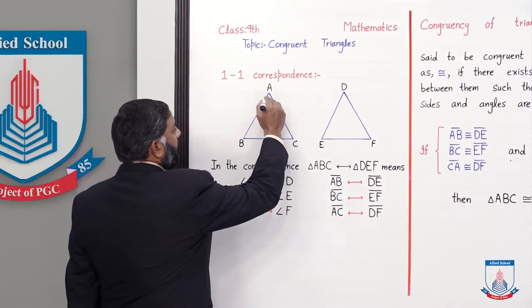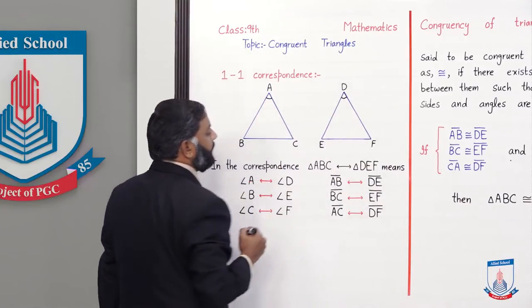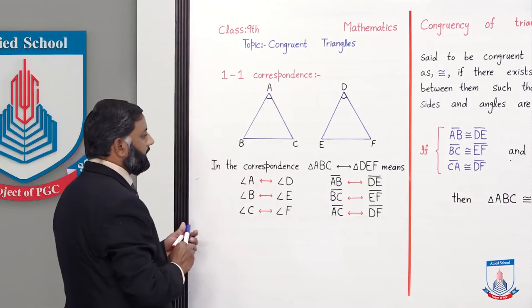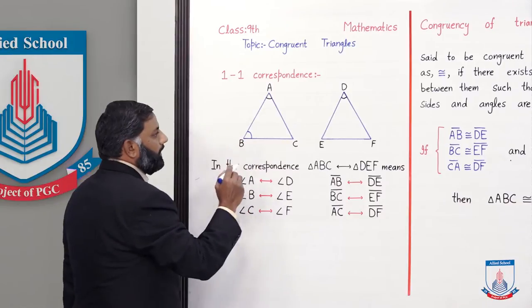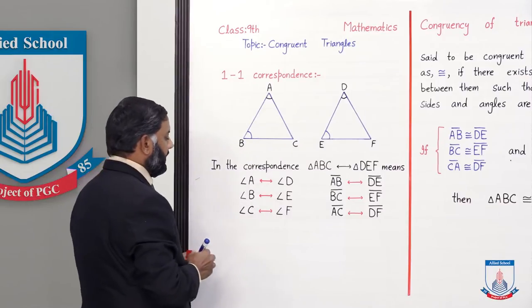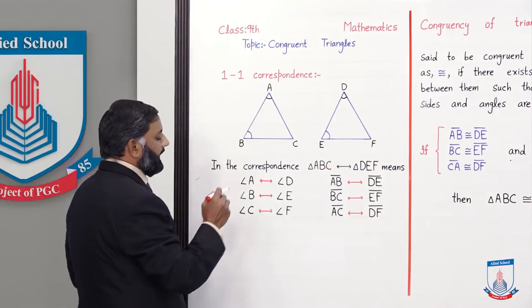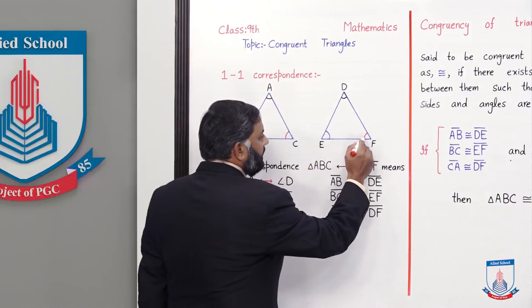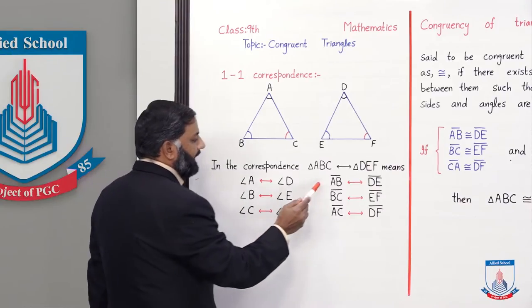Yeh angle A hai aur doosri triangle mein angle D — yeh donon corresponding angles hain. Isi tarah angle B corresponds to angle E: ABC triangle mein angle B aur DEF triangle mein angle E, yeh donon corresponding angles hain. Isi tarah angle C corresponds to angle F: ABC triangle mein angle C aur DEF triangle mein angle F — corresponding angles hain.